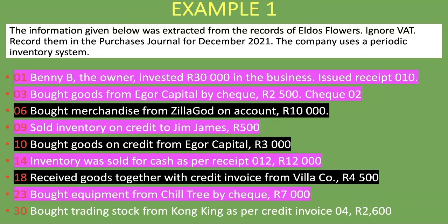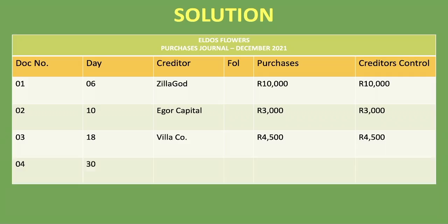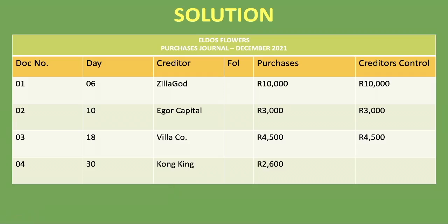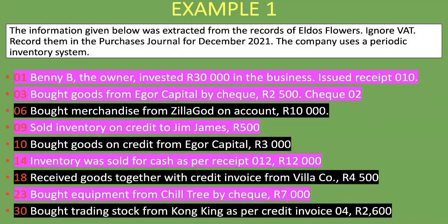On the 30th, trading stock was bought from Conking as per credit invoice 04 for 2,600 rand. This goes into the purchases journal. Here we are given the invoice number — 04 — so we put that in the document number column. Day is 30, creditor is Conking, and both the purchases column and creditors control column show 2,600 rand.